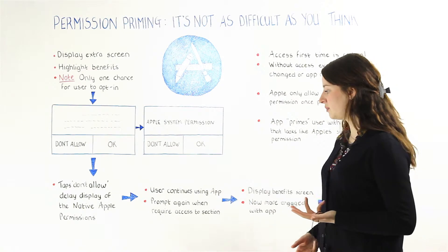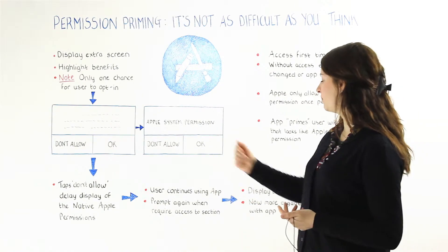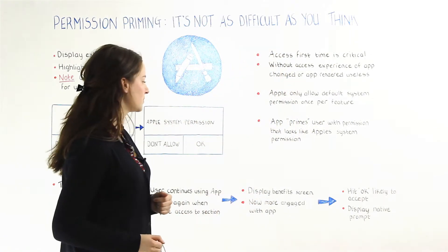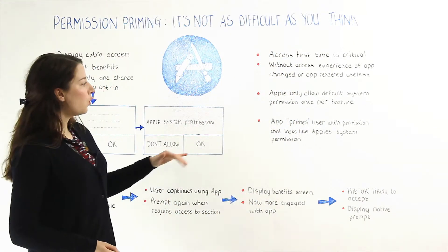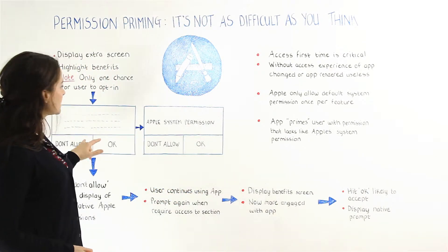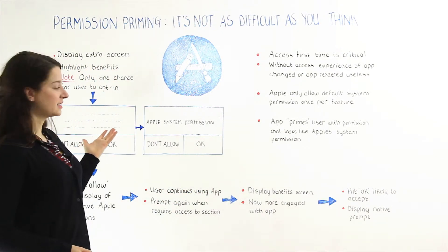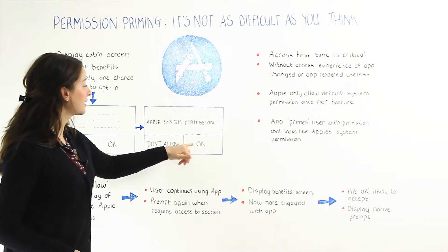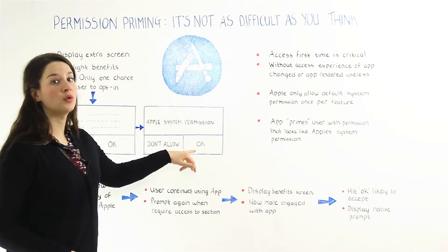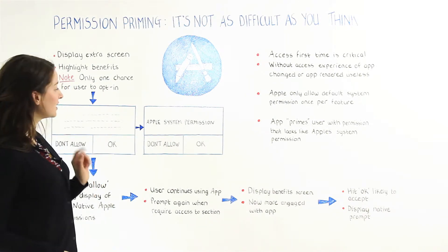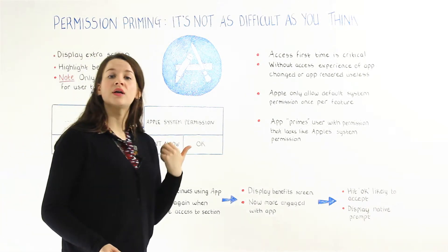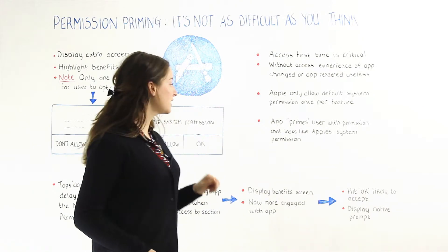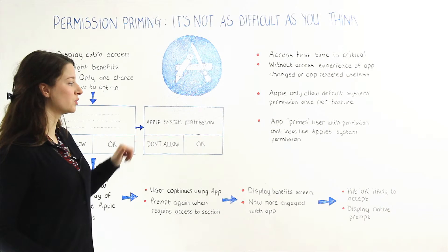The user continues using the app and you prompt this permission again when they require access to a certain area, such as the camera. When they do want access to the camera, you display this screen again highlighting the benefits — they're more engaged with the app and more likely to click okay, and then okay for the Apple system permission as well. If they click don't allow again, you can prompt them at a later time when they look for access again. This way they're never tapping the Apple system permission prematurely, which is really important.